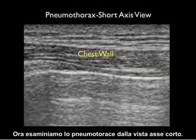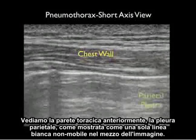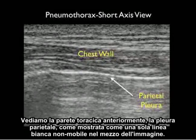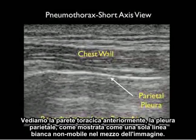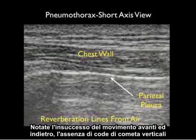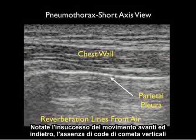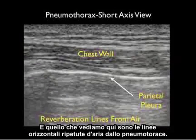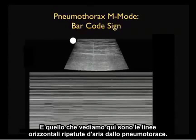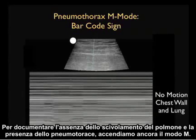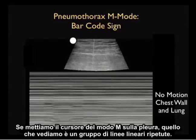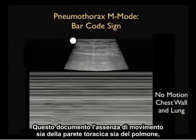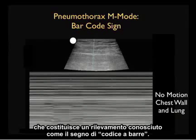Now let's inspect a pneumothorax from the short axis view. We see the chest wall anteriorly, the parietal pleura shown as a single non-mobile white line in the middle of the image. Note the failure of movement back and forth, the lack of vertical comet tails, and what we see here are repeating horizontal air lines from the pneumothorax. To document the absence of lung sliding and the presence of a pneumothorax, we'll again turn to M-mode. If we put the M-mode cursor down on the pleura, what we'll see is a set of linear repeating lines — this documents no motion of both the chest wall and the lung, making up a finding known as the barcode sign.